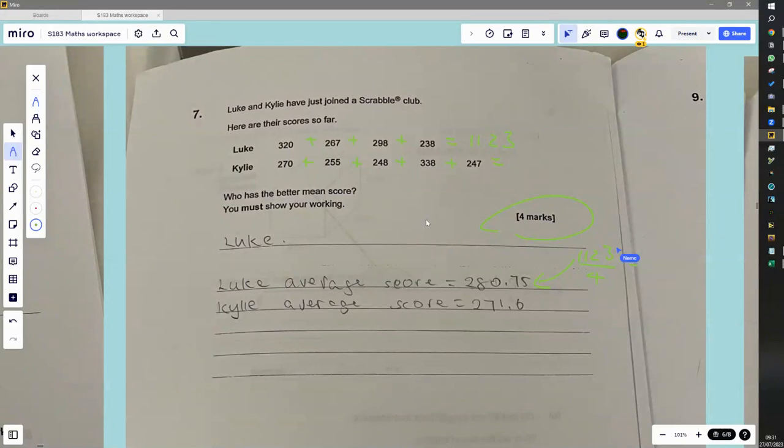And the same with this one here, so you add all the numbers together, 270 plus 255 plus 248 plus 338 plus 238 plus 247, and we get 1358. So this one would be 1358, but not divided by 4, divided by 5, because there are 5 of them. So divided by 5, we get 271.6, which is what that one is there.